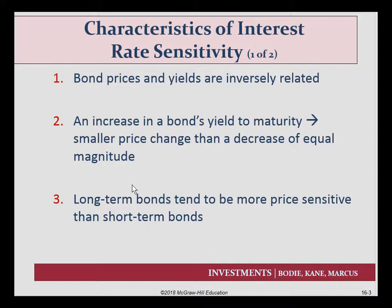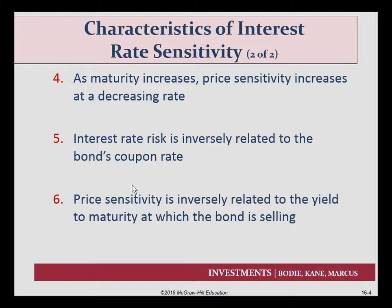Long-term bonds tend to be more price sensitive than short-term bonds. As maturity increases, price sensitivity goes up, but it goes up at a decreasing rate — so longer bonds are more price sensitive than shorter bonds, but that sensitivity itself is not as intense as you get to longer and longer times away from today. Interest rate risk is inversely related to the bond's coupon rate, so a high coupon rate bond typically has lower interest rate risk. Price sensitivity is also inversely related to the yield to maturity at which the bond is currently selling.